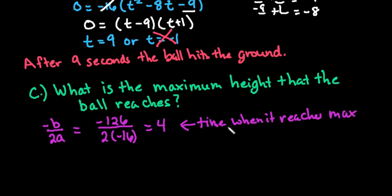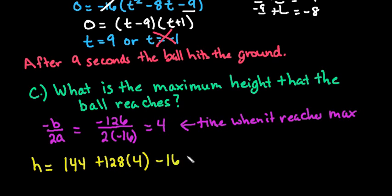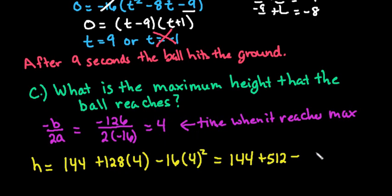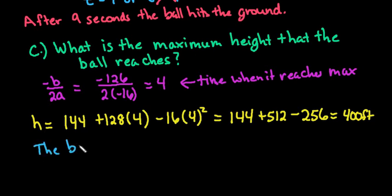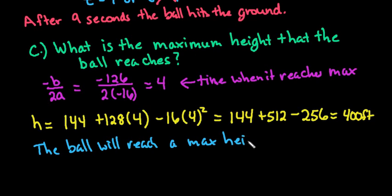The ball spends 4 seconds going upward and then turns and starts going back toward the ground. To find the height we plug t equals 4 back into the equation: h equals 144 plus 128 times 4 minus 16 times 4 squared. This gives us 144 plus 512 minus 256, which works out to 400 feet. So the ball will reach a maximum height of 400 feet.